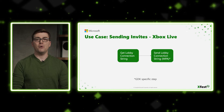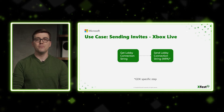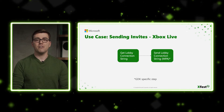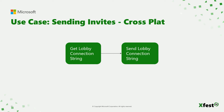Invites are easy with PlayFab Multiplayer and MPA. Simply get the connection string for the lobby you're in and pass it into MPA's send invite function. Cross-platform invites are equally easy — use PlayFab Multiplayer's send invite function instead, and again pass the connection string. To receive cross-platform invites, you need to make sure you call start listening for lobby invites at some point after initialization.